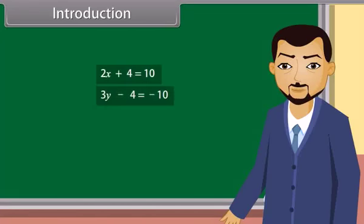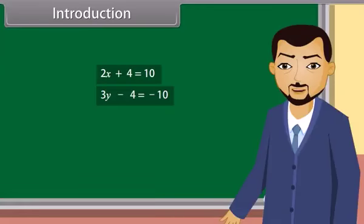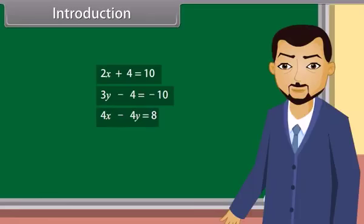Students, look at these equations. What type of equations are these? These are linear equations. And what type of equation is this? This is also a linear equation. This is also a linear equation, but it has two variables. So it's a linear equation in two variables. Today we will learn about the pair of linear equations in two variables.